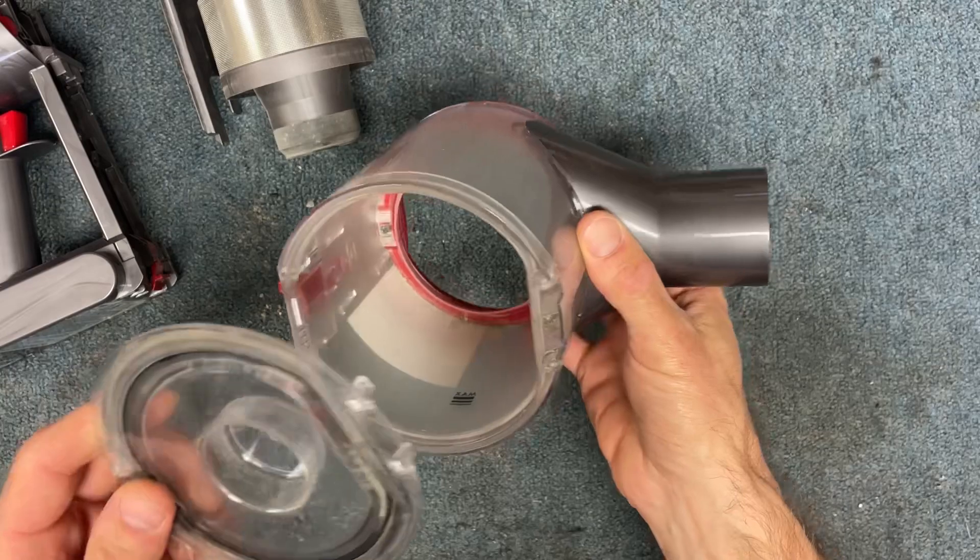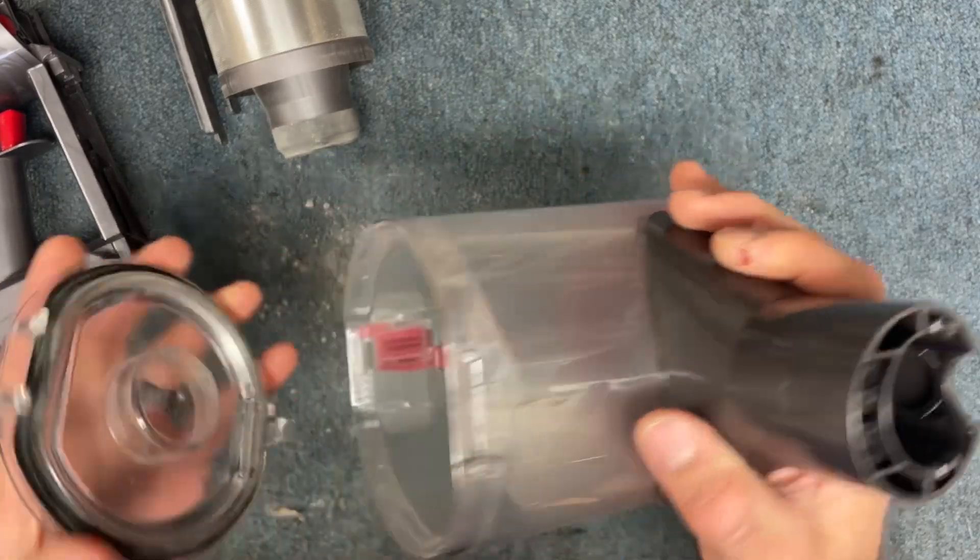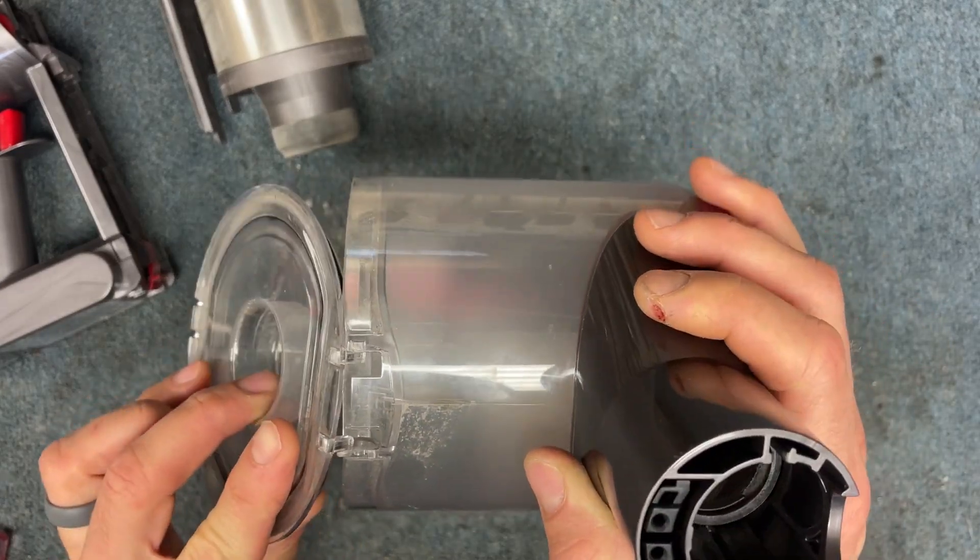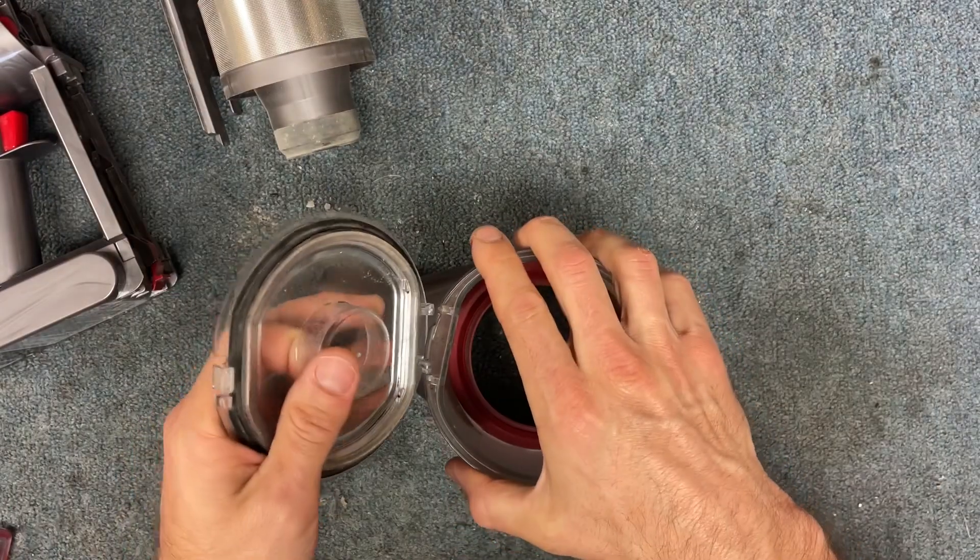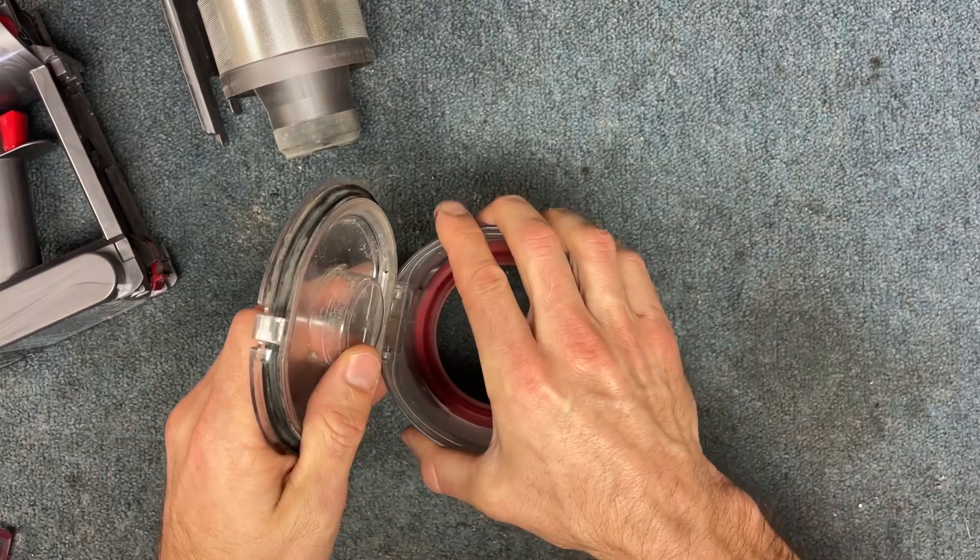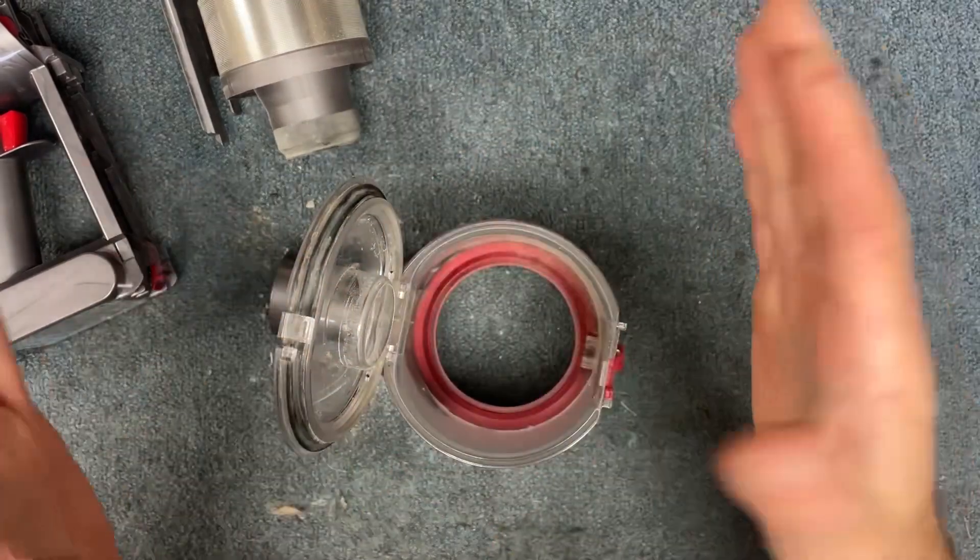One of my commenters was saying that Dyson was telling her she had to replace this whole bin. Now where these go is these go right back in there. There's two little holes here and here. And if you squeeze this bin like that, you can just pop it. It kind of spreads those openings out.